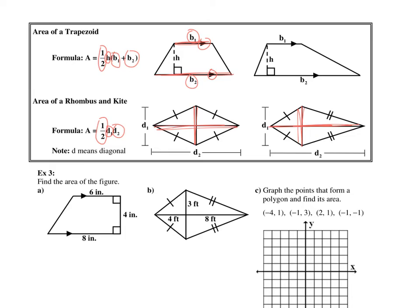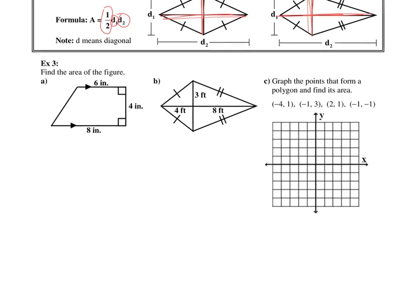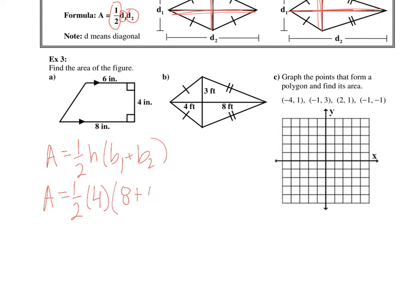Example 3: find the area of the figure. For part A, we have a trapezoid, so using our formula — half of the height times (base 1 plus base 2) — the height is 4, base 1 is 8, and base 2 is 6. That gives us 2 times 14, so the area is 28 inches squared.